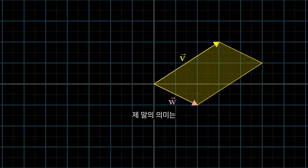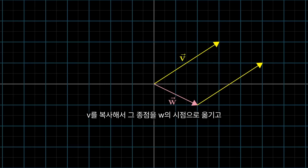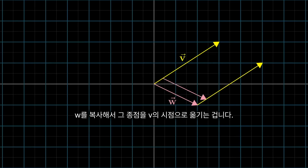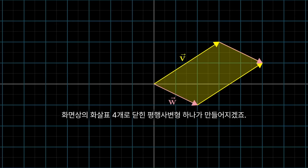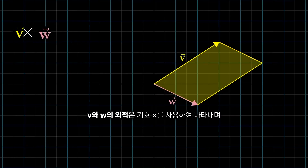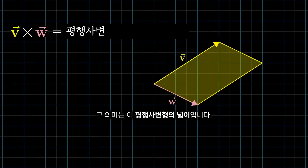What I mean by that is that if you take a copy of v and move its tail to the tip of w, and you take a copy of w and move its tail to the tip of v, the four vectors now on the screen enclose a certain parallelogram. The cross product of v and w, written with the x-shaped multiplication symbol, is the area of this parallelogram.